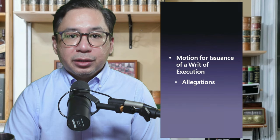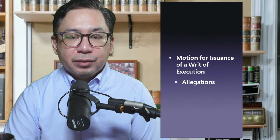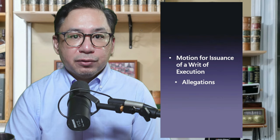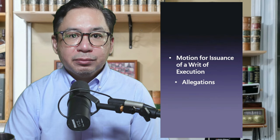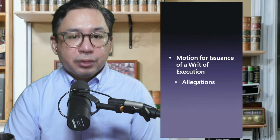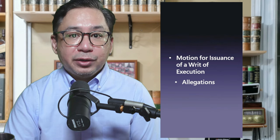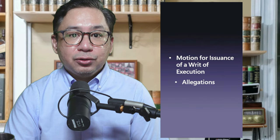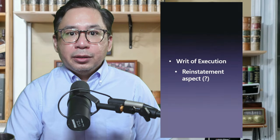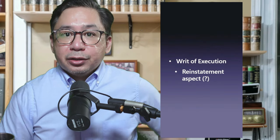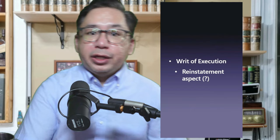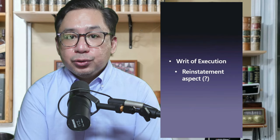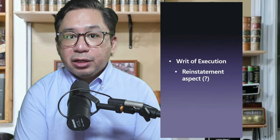Third, the fact of finality of the decision as shown by a Certificate of Finality. Fourth, the prayer for the issuance of a corresponding writ of execution. Fifth, a writ of execution will be issued when a Certificate of Finality is issued by the Office of the Labor Arbiter.